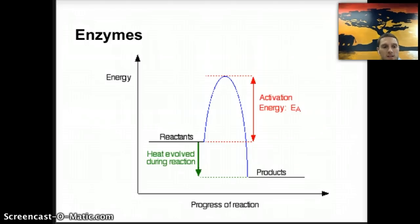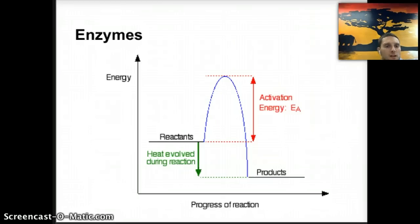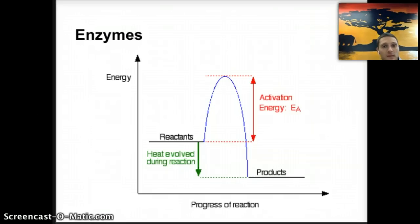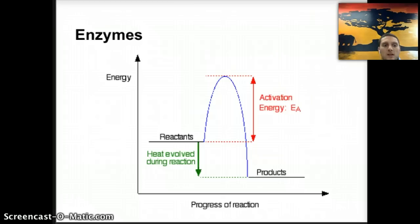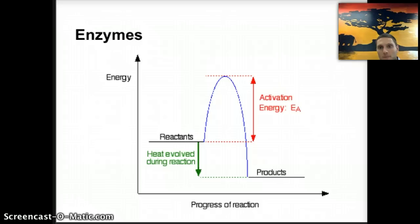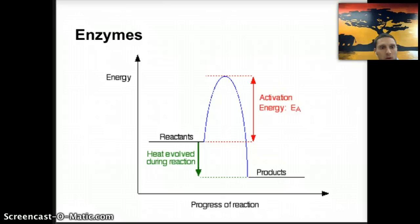Enzymes are molecules that help to speed up a reaction. They allow a reaction to occur at a much faster rate than it would normally. Some examples of enzymes would be pepsin, which is found in your stomach and is an enzyme that helps to digest other proteins; lipase, which helps to break down fats; and hexokinase, which is the first reaction in the glycolysis pathway, a reaction that we'll look at when we get to cellular respiration.